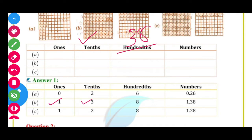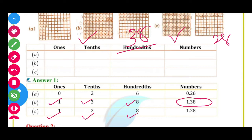10th mein 3 aayega, 100th mein 8. So our answer is 1.38 for the last box. And the total is 20 aur 8, so 0.28 — 2 aayega 10th mein aur 100th mein 8. So answer is 1.28.